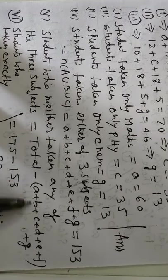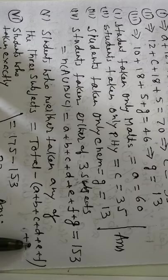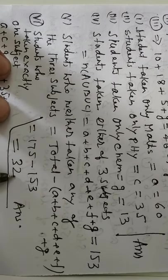A, B, C, D, E, F, G. So, total 175 minus 153, 32.